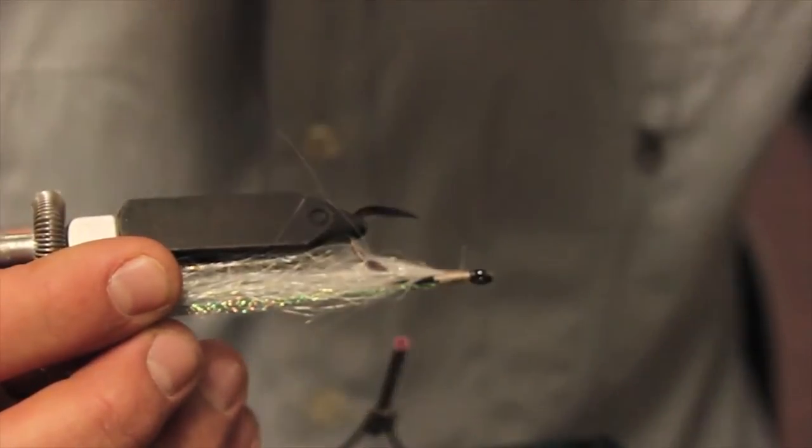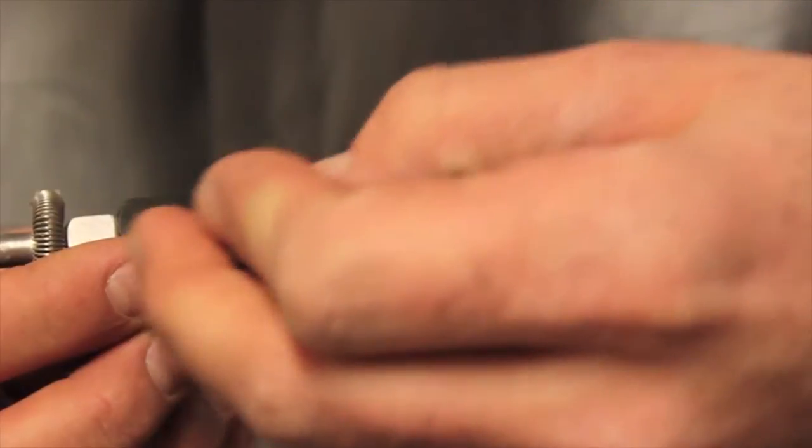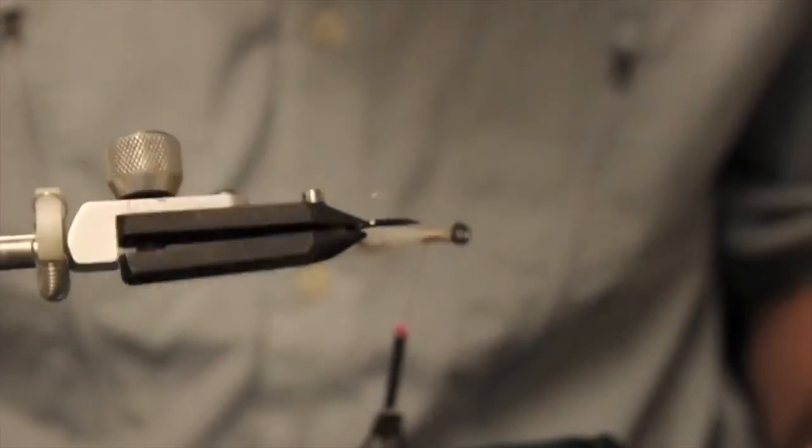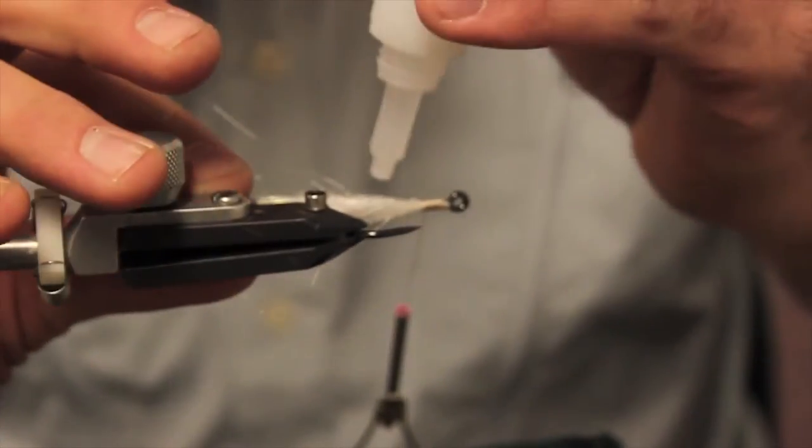And I also like to add just a little bit of glue. This just gets the body, just makes less fouling of the fly when you're stripping in the fly fast. Or if a fish hits it, misses it and comes back.